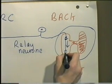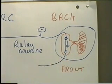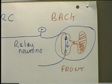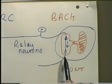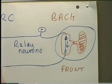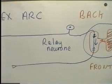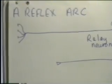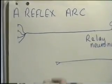Here we have the cell body of a motor neuron. It's important to notice that all motor neurons leave the spinal cord via the anterior nerve root — via the front nerve root. So here we have a motor neuron cell body, motor neuron axon, motor neuron motor end plate, and this is connected to a muscle.